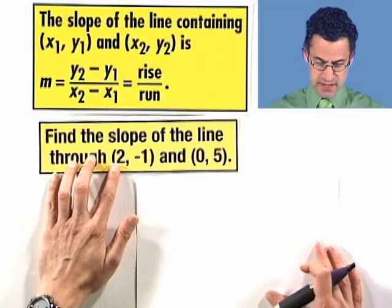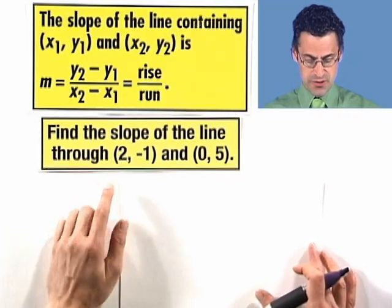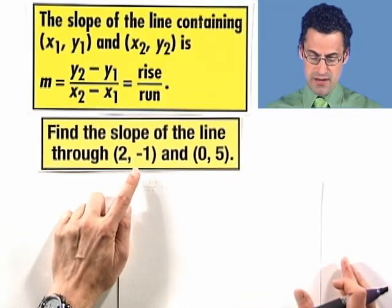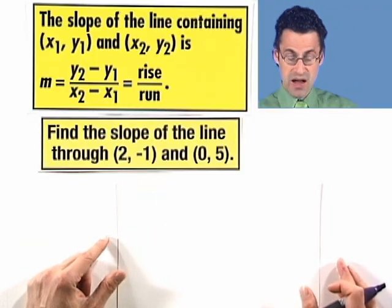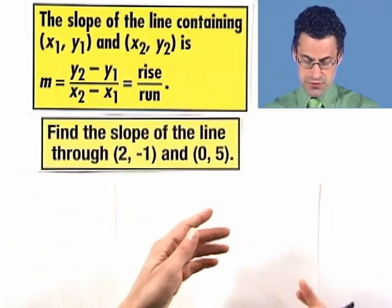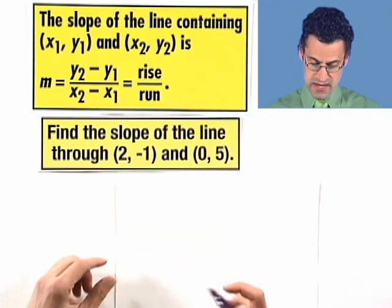All right, let's practice finding slopes. So here's the first question. Let's find the slope of the line that passes through the point 2 comma negative 1 and 0 comma 5. Well, all we're going to do is subtract the y's and subtract the x's and take the quotient.